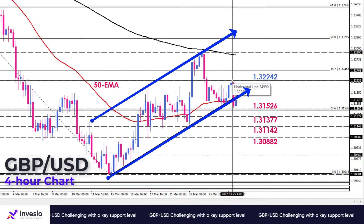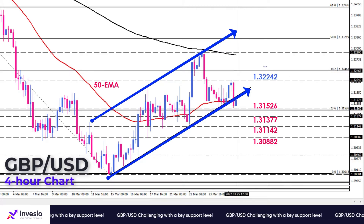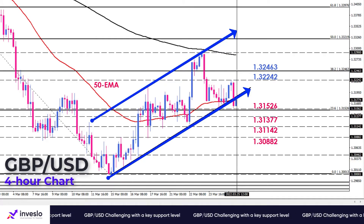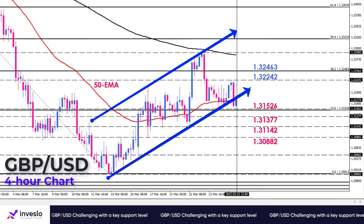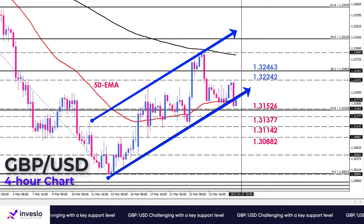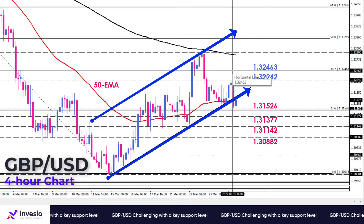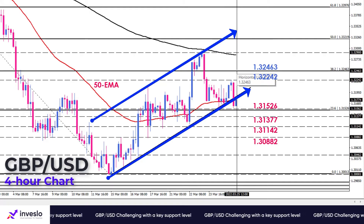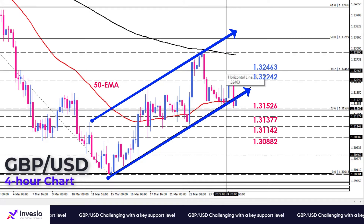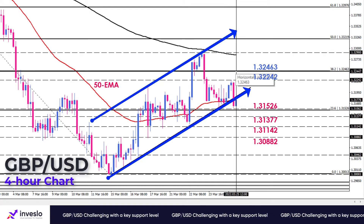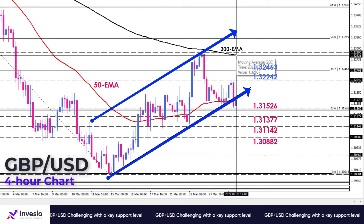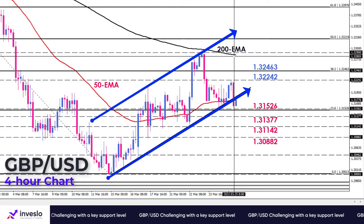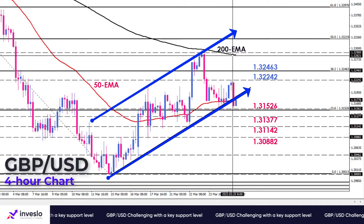Overstepping this barricade can encourage buyers to reclaim the 1.32463 level, which is in line with the 38.2% Fibonacci level, as you can see here in the charts. A breach of this level can accelerate the move towards the 200 bar EMA.